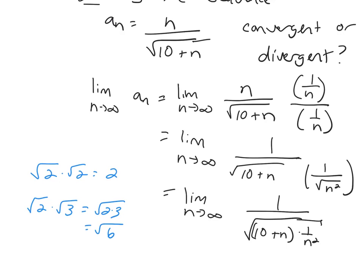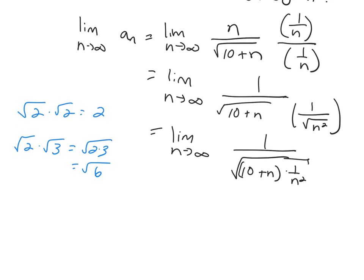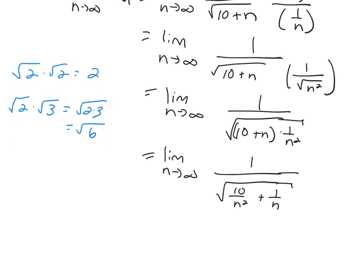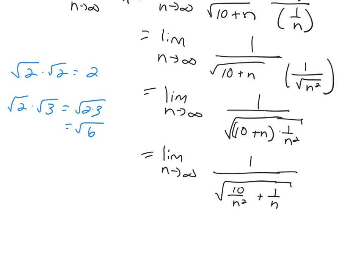Okay. So we're going to distribute underneath our square root, 1 over the square root 10 over n squared plus 1 over n. So we're done simplifying everything, so now we just need to think about what's happening in the numerator, what's happening in the denominator.